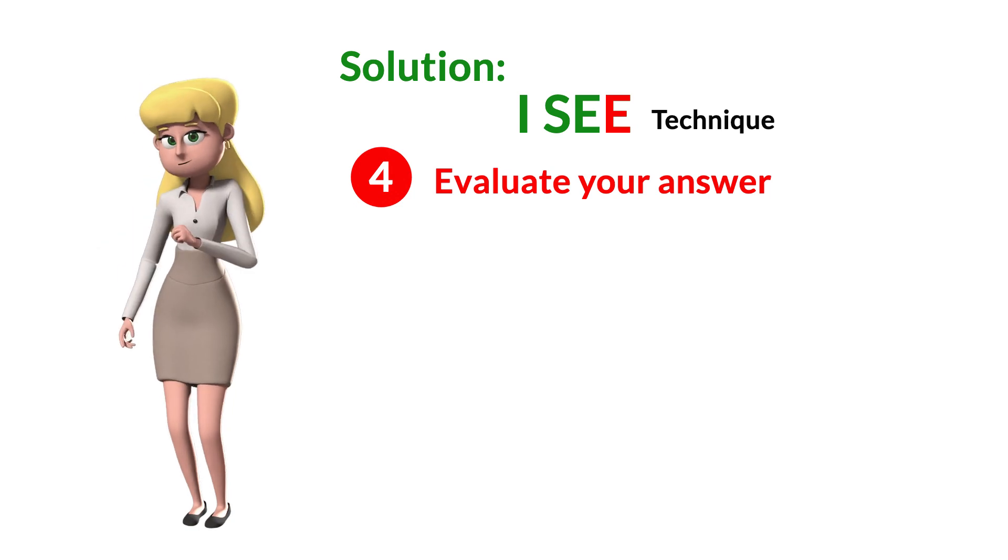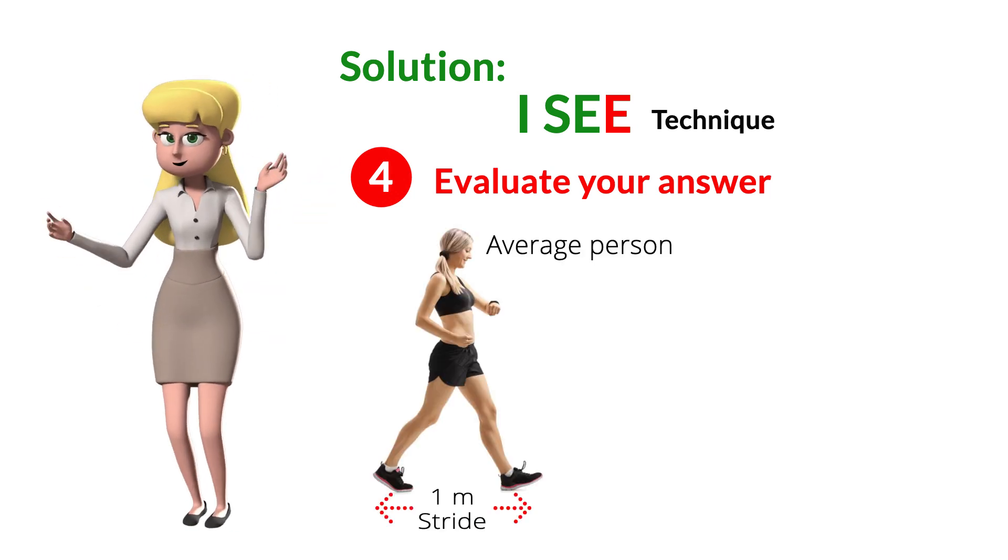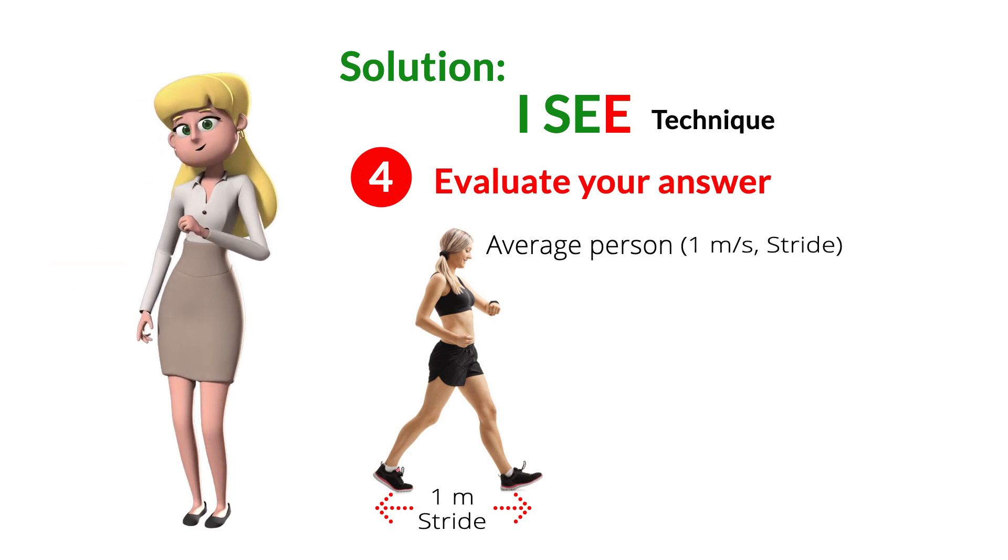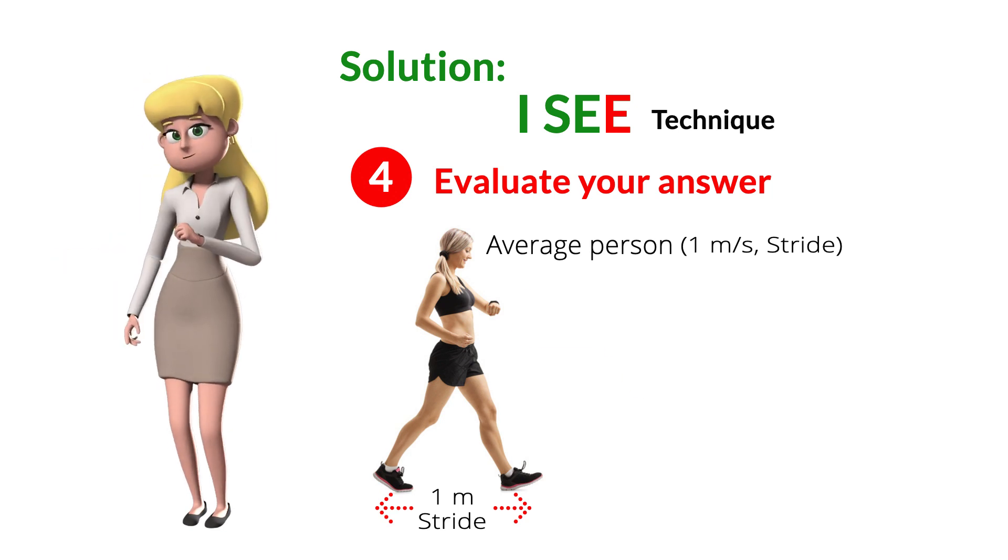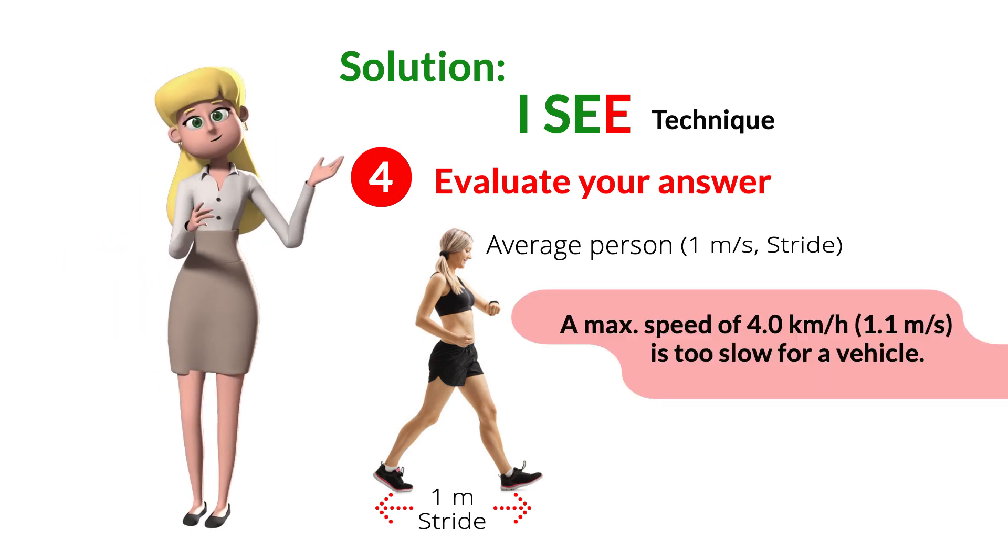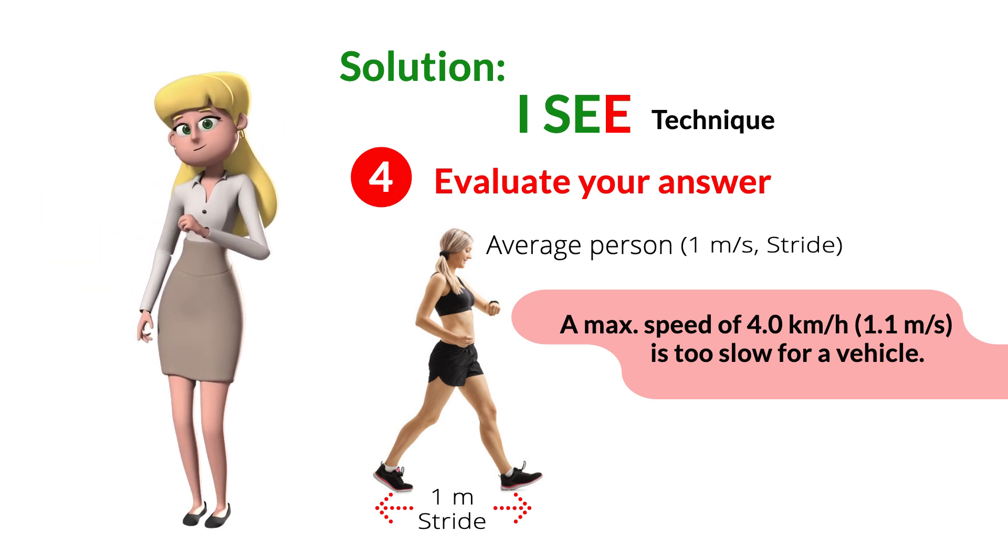Step number four: Evaluate your answer. The length of an average person's stride is about 1 meter, and a good walking pace is about 1 stride per second, that is roughly 1 meter per second. By evaluating, we can say that a speed of 4.0 kilometers per hour is too slow for a vehicle, and that there's something wrong with the vehicle.